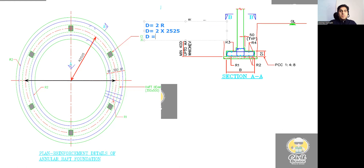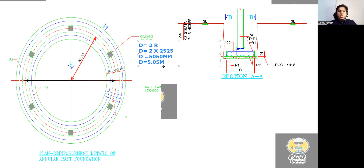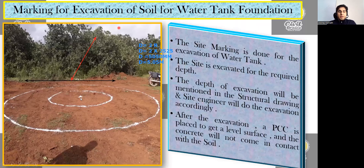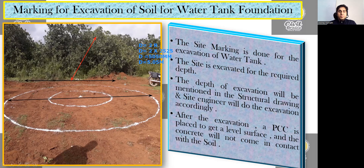So the diameter = 2 × 2525 = 5050 mm, which equals 5.05 meters. Going back to the site, the circular marking done on site represents this 5.05 meter diameter. From the center point to the edge is the radius of 2.525 meters. This is how the drawing dimensions translate directly to site execution.